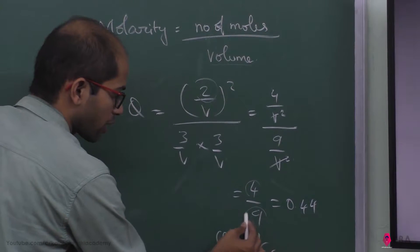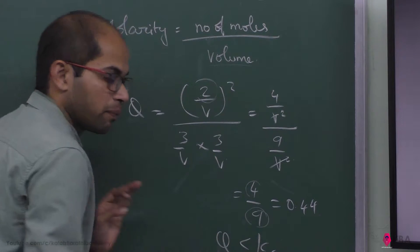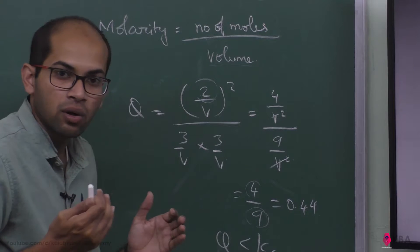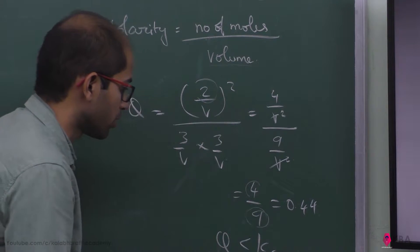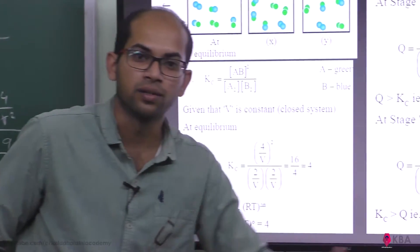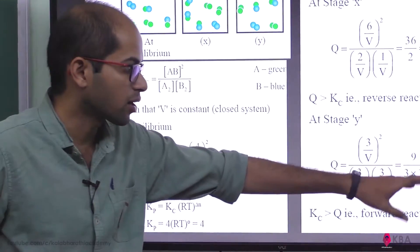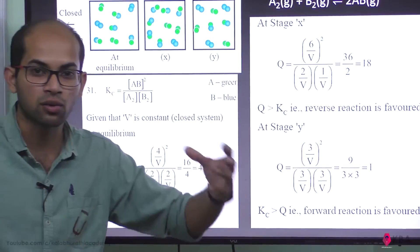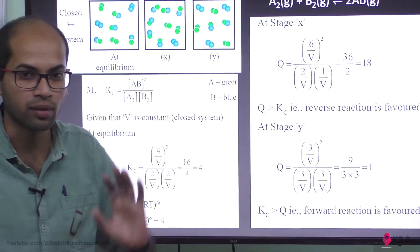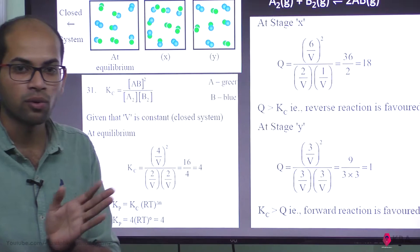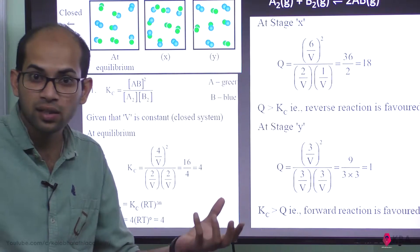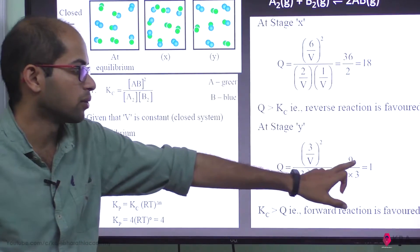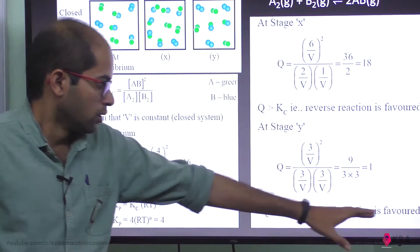So in scene Y, the forward reaction is favored. Comparing the concentrations — that is lower concentration on the reactant side. So forward reaction is favored. Comparing the two Q values: scene X has reverse reaction favored, scene Y has forward reaction favored.